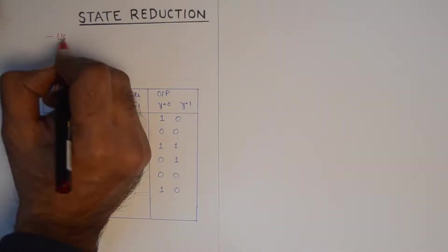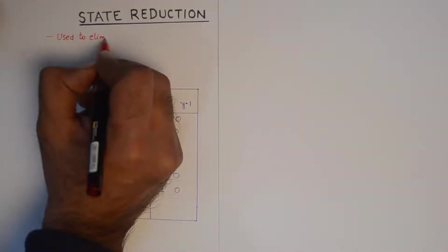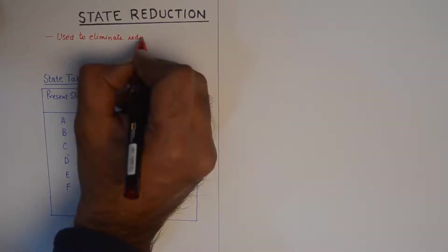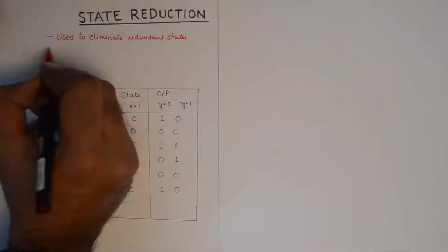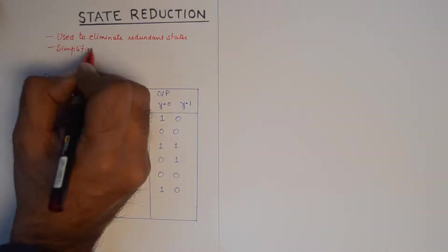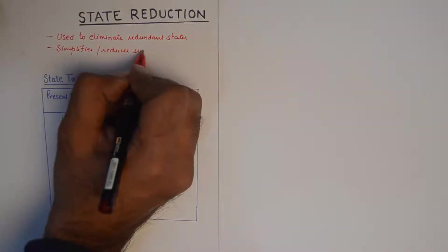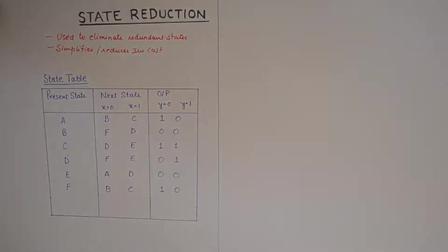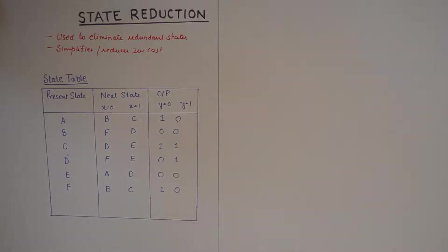State reduction is used to eliminate redundant states, which simplifies and reduces the cost — because every state is made up of flip-flops. So if the number of states is reduced and the redundant states are removed, the cost of the circuit will go down. I'll take up an example of a state table of a sequential logic design, and from this state table we'll try to reduce it using our techniques for state reduction.